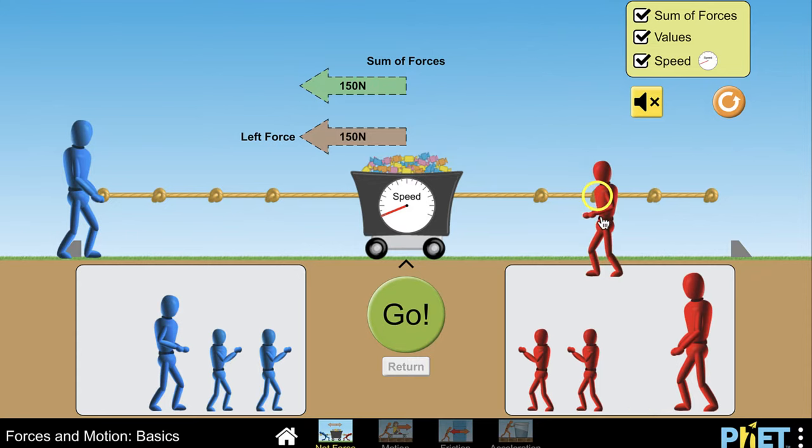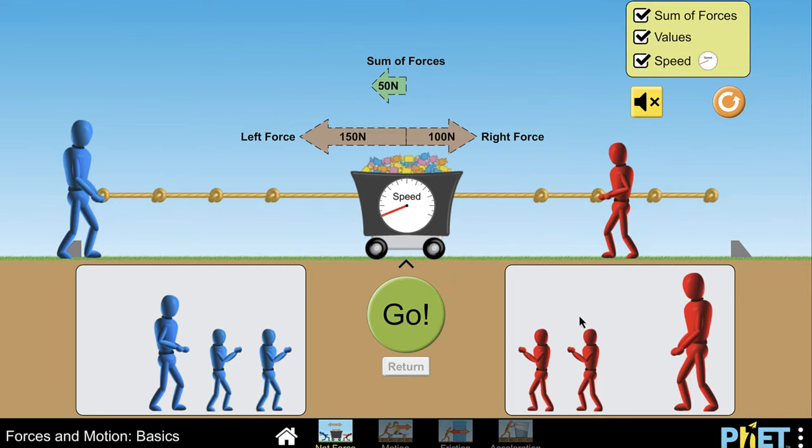And the total force, because there's nothing on the right, is 150 Newtons. Now if we put a figure on the right hand side that is 100 Newtons, we see that there is going to be an unbalanced force. There is a greater force to the left than there is to the right, leaving you with a net force, the sum of the forces here, of 50 Newtons.